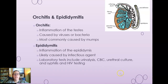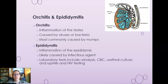Orchitis is inflammation of the testes, usually caused by viruses or bacteria — the most common cause is mumps. Epididymitis is inflammation of the epididymis, usually caused by an infectious agent. Diagnostic workup includes UA, CBC, urethral cultures, and syphilis and HIV testing to find a cause.